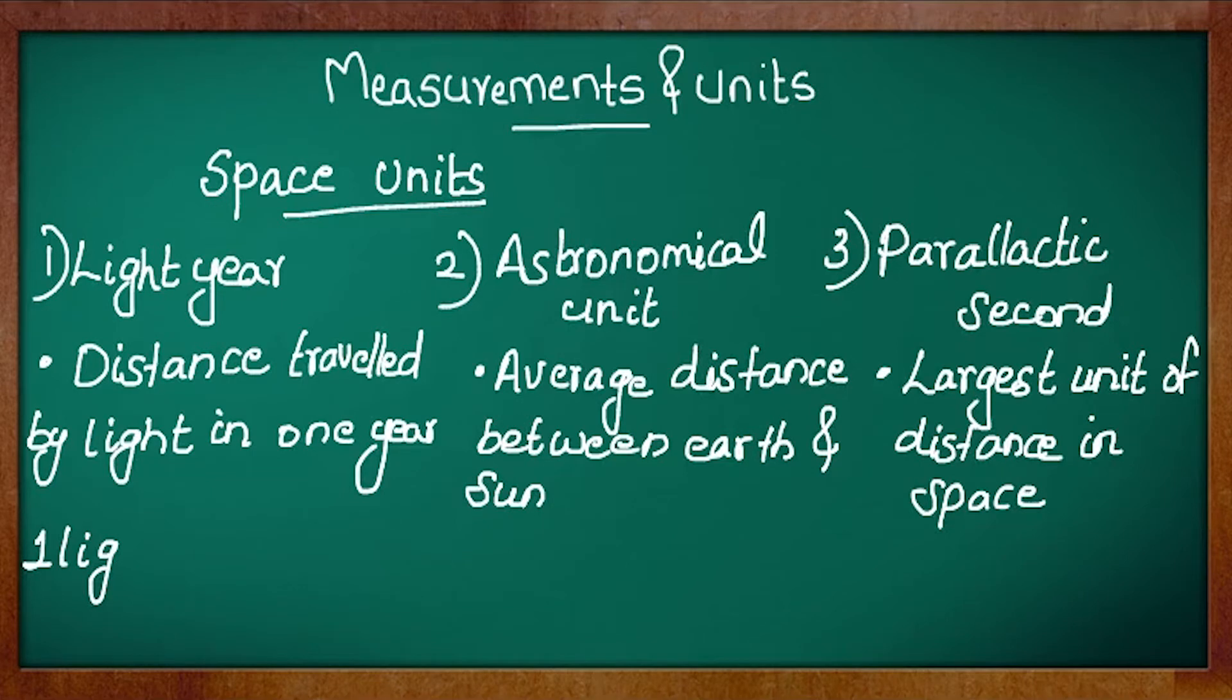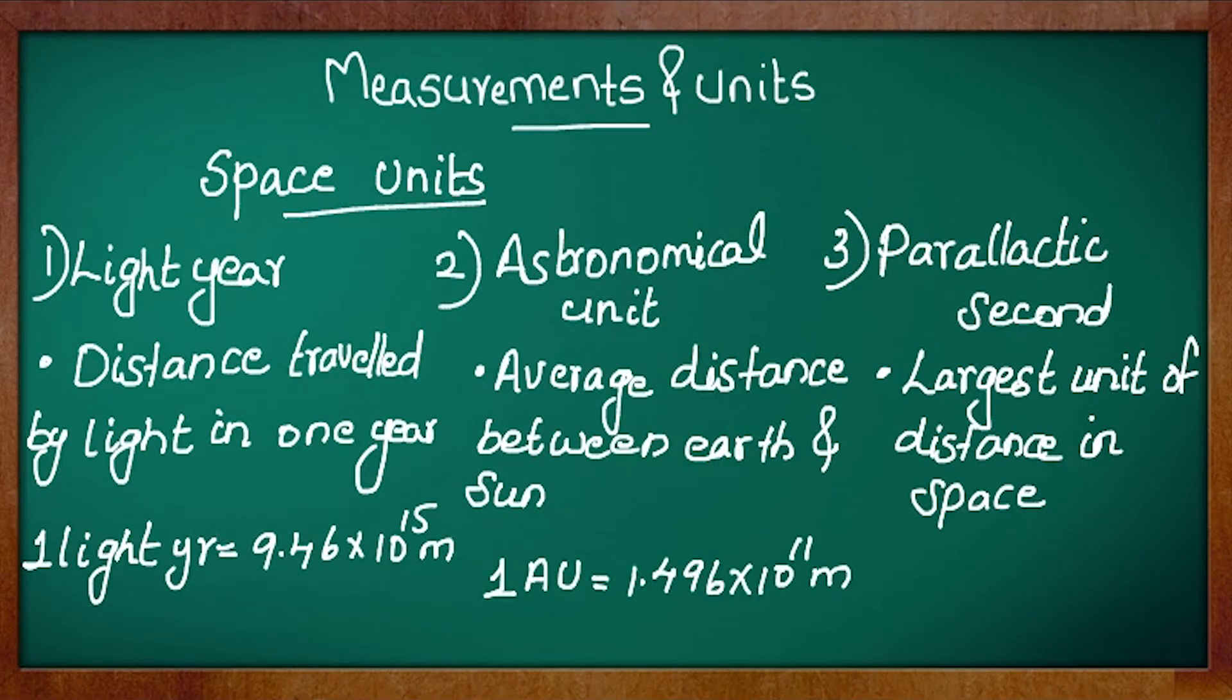One light year is equal to 9.46 × 10^15 meter, one AU is equal to 1.496 × 10^11 meter, and one parsec is equal to 3.08 × 10^16 meter.